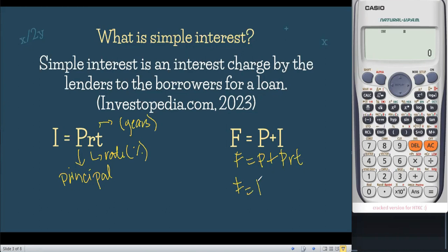Pwede natin siyang i-rewrite into F is equal to P plus PRT, or simply F is equal to P—i-factor out natin si P dahil may dalawa silang P—so 1 plus RT. Kapag i-distribute natin si P, P times 1 is P, P times RT is PRT. So this part is the same, yun lang para maging isahan si P, inilabas lang natin siya.